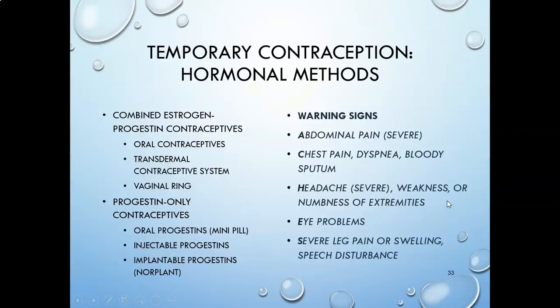Another method many people think of when it comes to contraception is hormonal methods — oral contraceptives as well as injectables and others. There are two broad categories with many brands on the market: combined contraceptives, which contain both estrogen and progesterone, and the mini pill or progestin-only pill, which contains only progesterone.